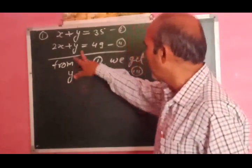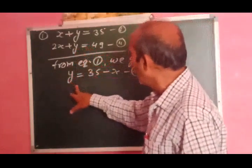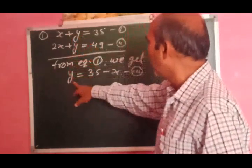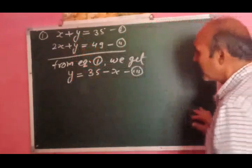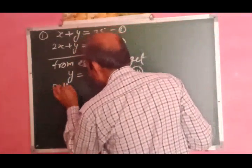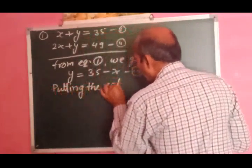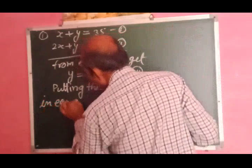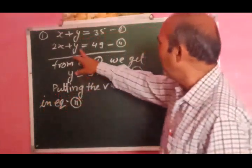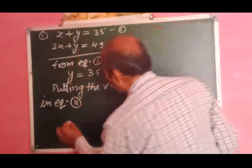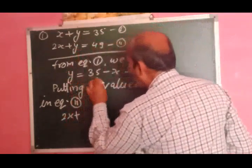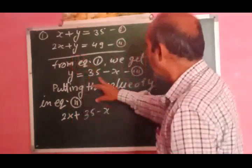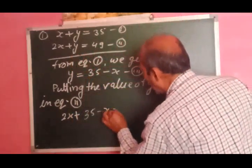अब इस y की value को equation second में put करेंगे. Putting the value of y in equation second: 2x + y की जगह y = 35 - x रखेंगे, तो 2x + (35 - x) = 49.